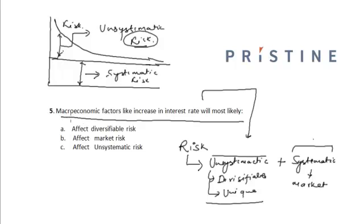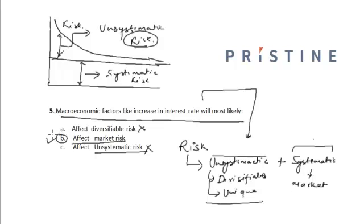So if this question asks whether macroeconomic factors like increase in interest rate will most likely affect the diversifiable risk — this is incorrect, because diversifiable risk is the other name for unsystematic risk, which can be reduced through diversification. Similarly, the unsystematic risk option is also incorrect. Hence, the correct option is option B: macroeconomic factors affect only the market risk.